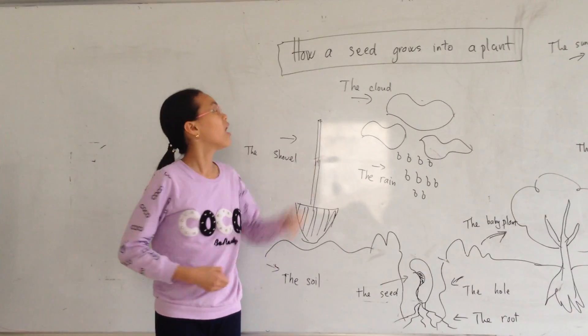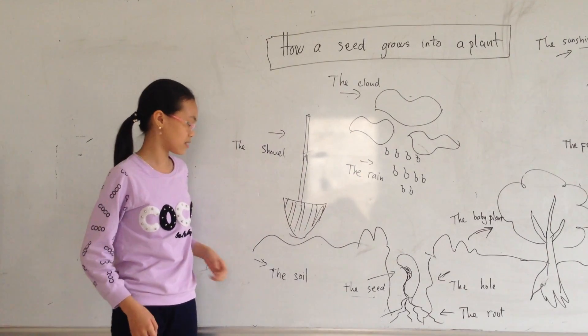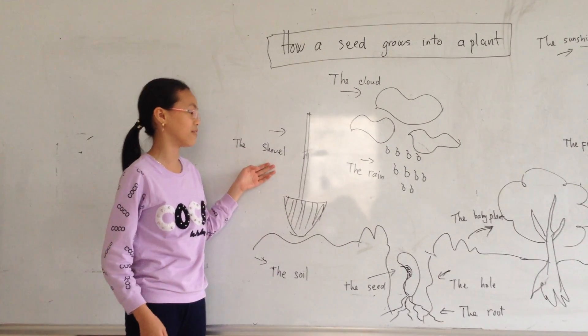Today, I will tell you how a seed grows into a plant. First, we need the sunshine and the soil.